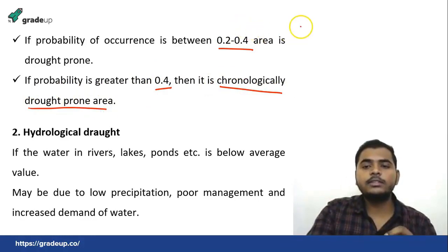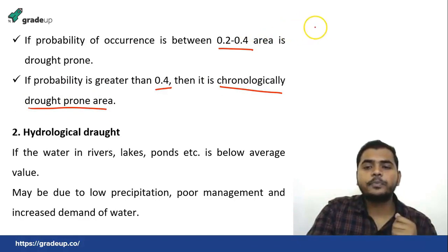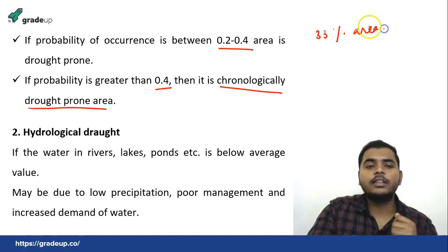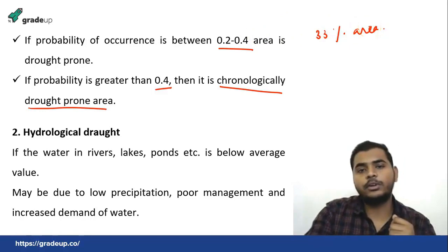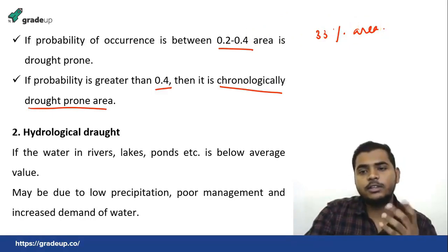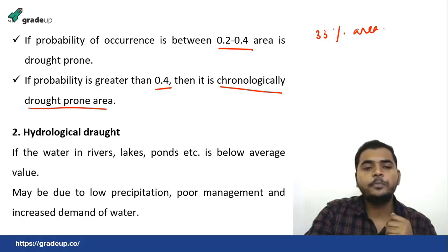For data in India, 33 percent of the area falls in the drought-prone region, which is a very huge area.